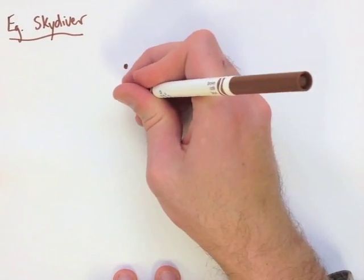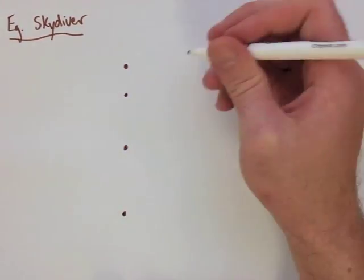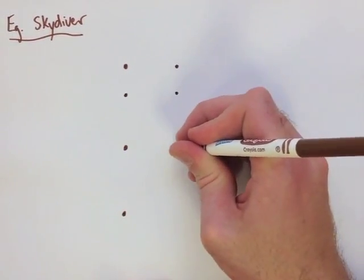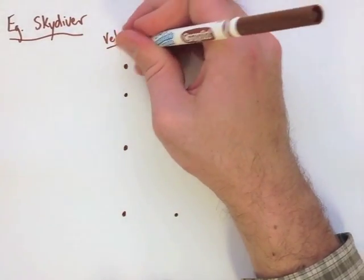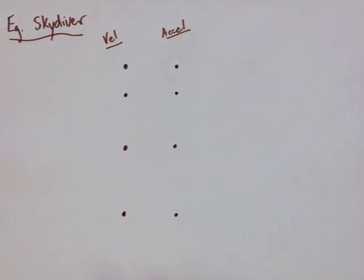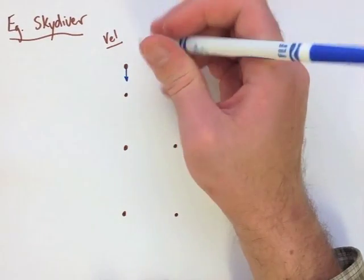Now, in the second example, we're looking at a skydiver who's falling out of a plane. Whenever we start one of these diagrams, we always assume that our first velocity vector is equal to zero, unless it's otherwise stated.